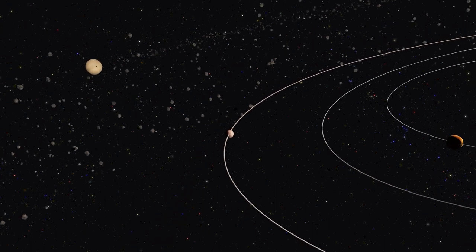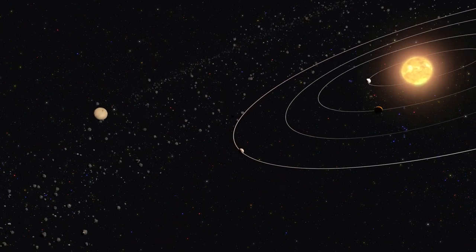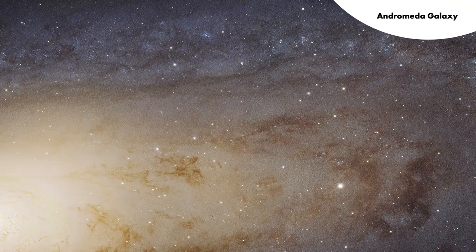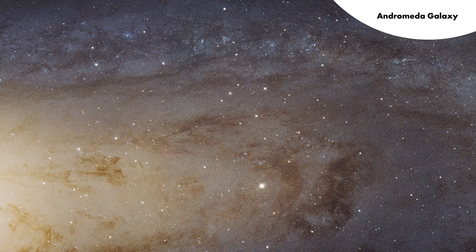Nearly every star has planets, and at least one in ten has an Earth-sized planet, and some have more than one. Each of the stars in this image might have many planets, but how would we know?